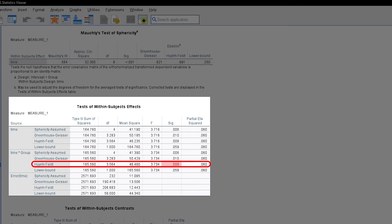In my example, the p-value in the HF line is 0.008, which is sufficiently small. I can therefore observe group differences over time. More on this later.